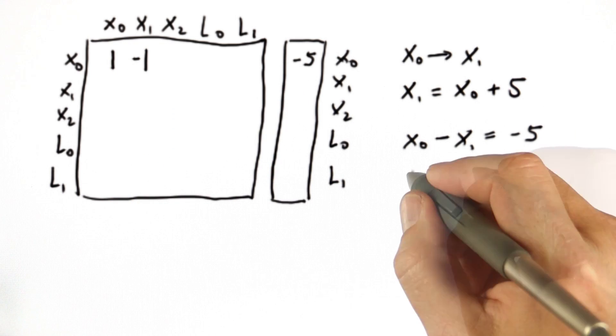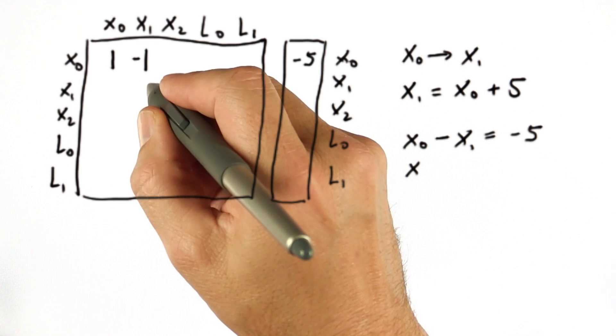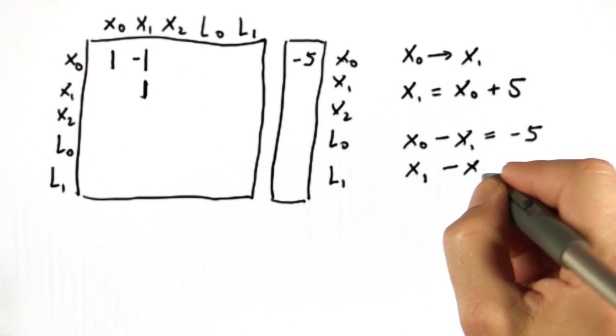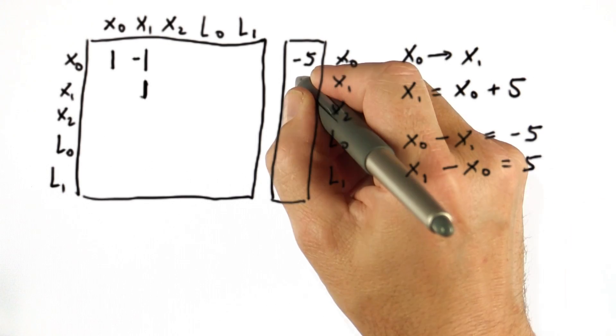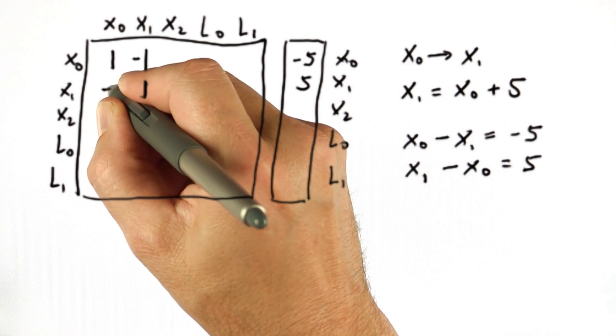Secondly, we do the same with x1 as positive, so we add 1 over here. And for that, x1 minus x0 equals plus 5. So you put 5 over here and a minus 1 over here.